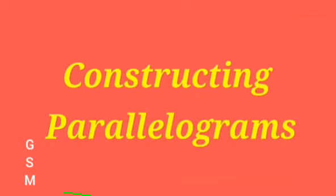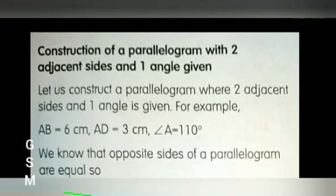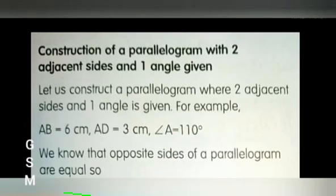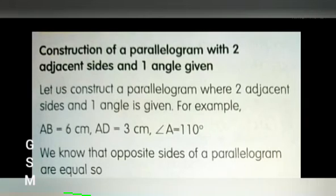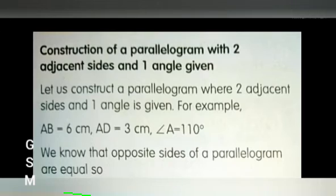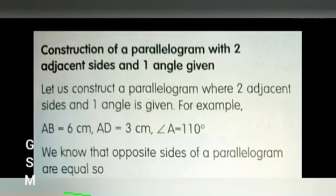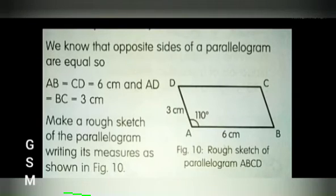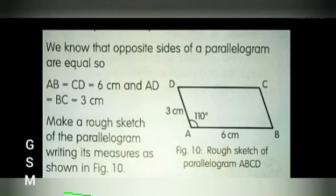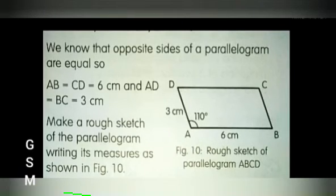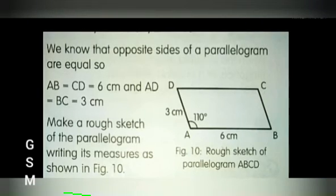Constructing parallelograms. Let us see how to construct a parallelogram with two adjacent sides and one angle given. For example: AB equals 6 cm, AD equals 3 cm, and angle A equals 110 degrees. We know that opposite sides of a parallelogram are equal, so AB equals CD equals 6 cm, and AD equals BC equals 3 cm. Make a rough sketch of the parallelogram writing its measures as shown in the figure.